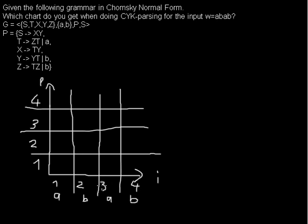Now we go bottom-up, starting at the first row. At the first place we have an A. So how can you derive a single A from the grammar? We have T here that can produce an A, so we write T into this cell. And the same for the third cell, because this is the only rule that can derive an A, and it doesn't matter where it is at this point. So if you have the same letter at two positions, you write the same variable into both cells.